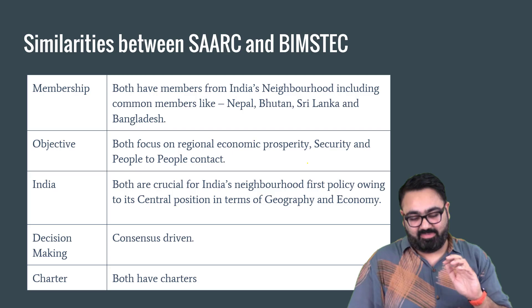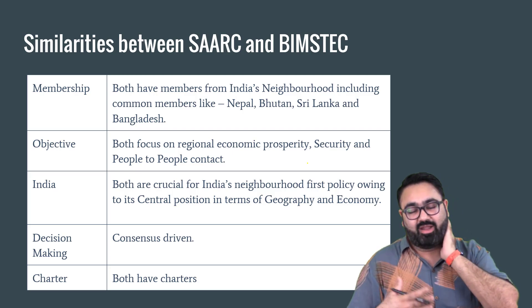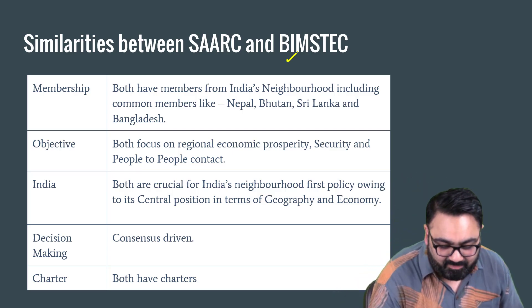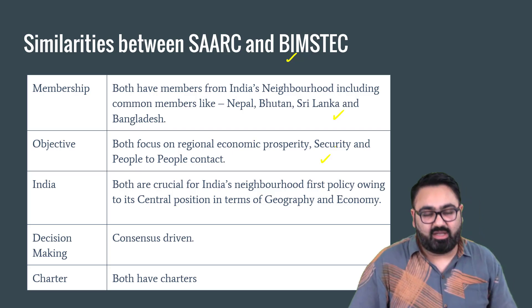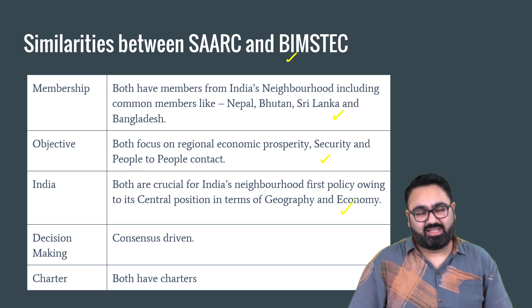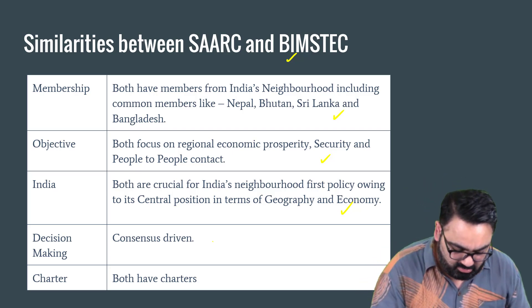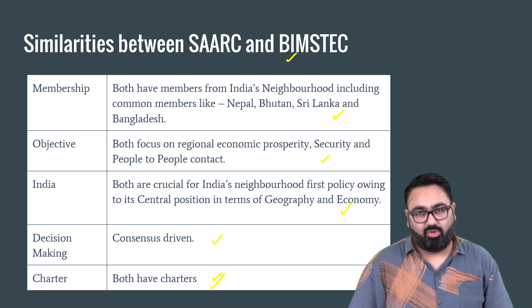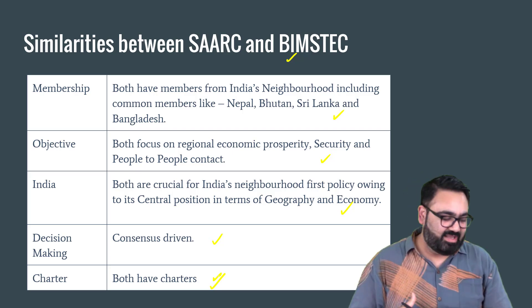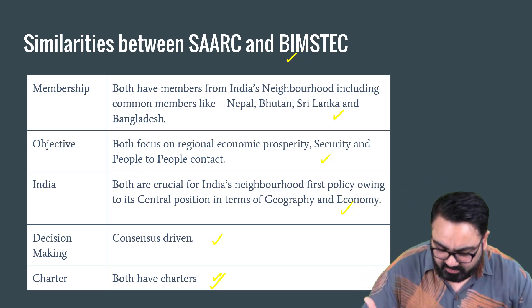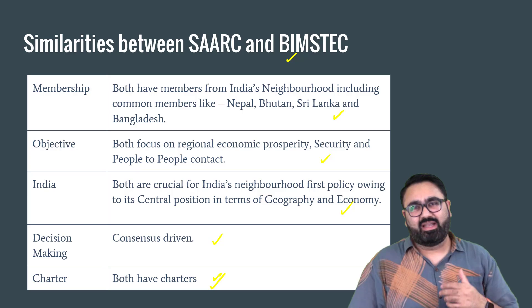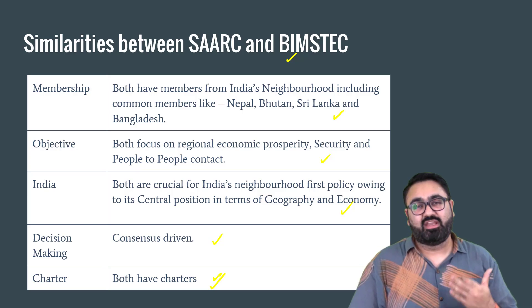What we have done is we have made a table — you can write in pointed form as well, it depends entirely upon you. The table covers similarities: membership, how objectives are similar, how India is the largest member in both groups and has a central position, how decision-making is through consensus, and how both organizations have a charter. You could present this in some other way also, but we've made a table to make it easier for the reader and the invigilator to understand.